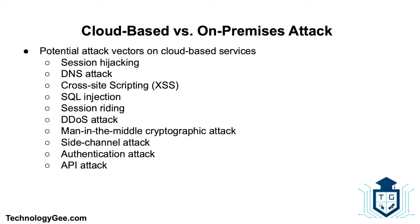Session riding is often used to describe a cross-site request forgery attack — attackers use this technique to transmit unauthorized commands by writing an active session using an email or malicious link to trick users while they are currently logged into a cloud service. A DDoS attack — the cloud is believed to be more vulnerable to DDoS attacks because it is shared by many users and organizations, which also makes any DDoS attack much more damaging. Man-in-the-middle cryptographic attacks occur when the attacker places himself in the communication between two users. A side channel attack compromises the cloud by placing a malicious virtual machine in close proximity to a target cloud server and then launching a side channel attack.